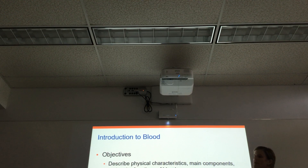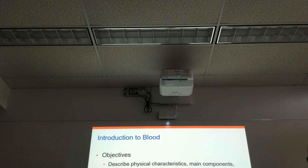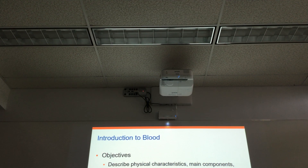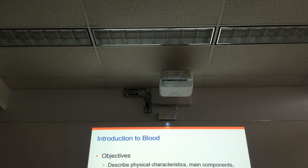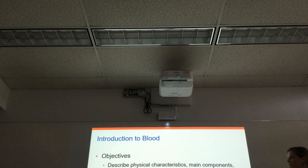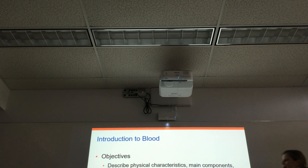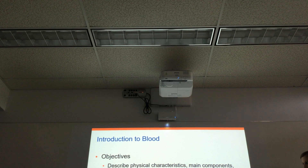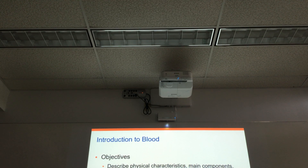You should be able to talk about the composition and the function of plasma, which is just the liquid or fluid component of blood. You should be able to talk about the structure and function of our red blood cells, which are our formed elements in our blood, and then hemoglobin, which is the main functional unit of the red blood cell, and also tell me about how red blood cells are made, how they're recycled, and how we get rid of all of the waste products.